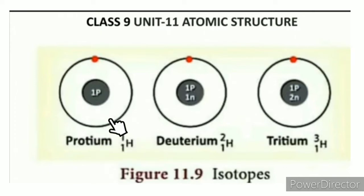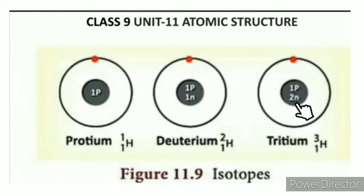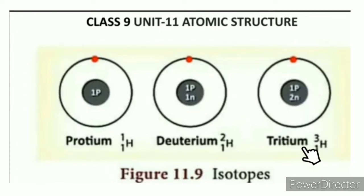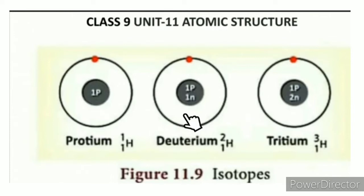For hydrogen, the mass numbers are 1, 2, and 3. The three isotopes are: protium (mass number 1), deuterium (mass number 2), and tritium (mass number 3). These three hydrogen atoms are isotopes of one another.